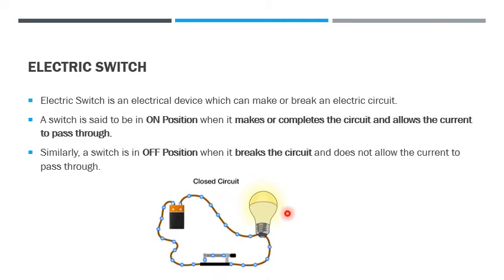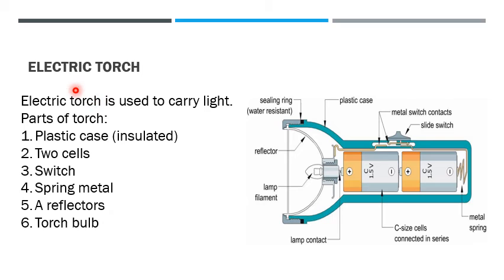As you are seeing in this picture, when the switch is connected or switched on, then current starts flowing and the bulb glows. But when the switch is off or disconnected from the wire, then current stops.